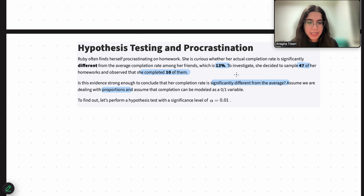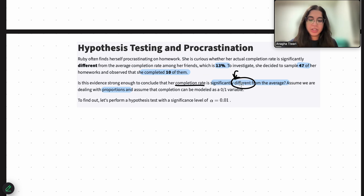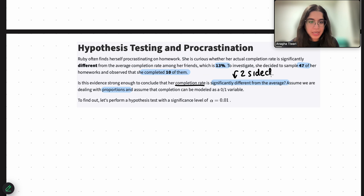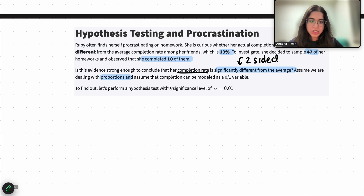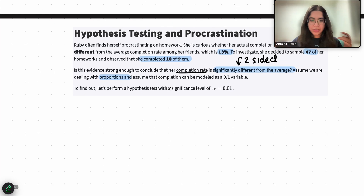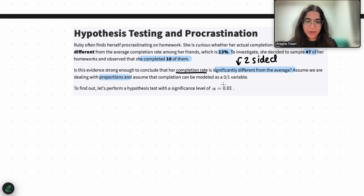We're checking: is our completion rate different from the average? Whenever you hear the word 'different,' that immediately means we are dealing with a two-sided test. It's two-sided because there's no one side — it can be a completion rate that is less than the average, or it can be a completion rate that is greater. We're just seeing if it's different.